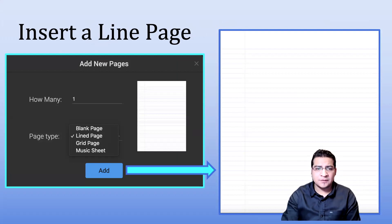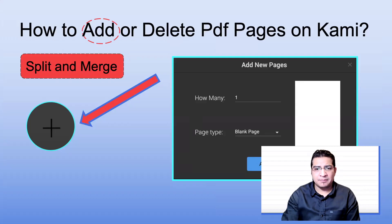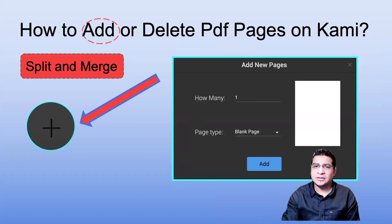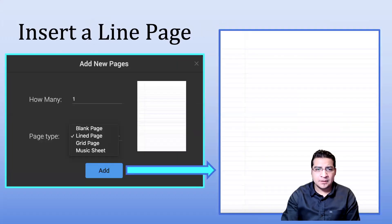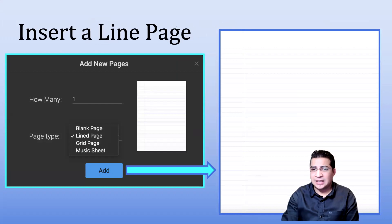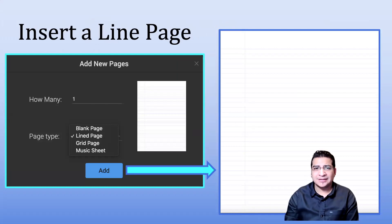I'm first going to show you the blank page — here's a blank page, simple as that. The next one I'm going to show you is the line page. Here's the line page. When you select this option, you'll see something that looks just like a normal notebook.